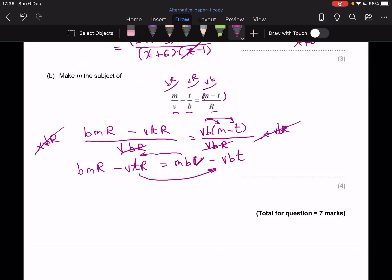And I need to basically take away MBV from both sides. So take away MBV from both sides. And I need to add VTR to both sides.